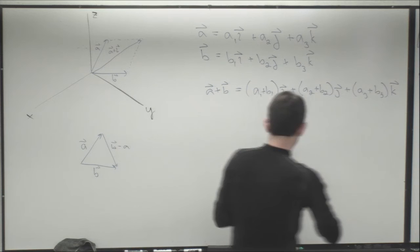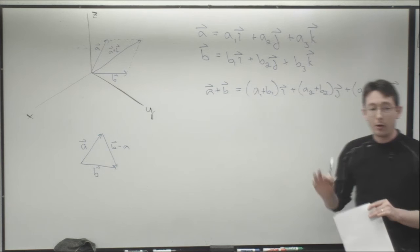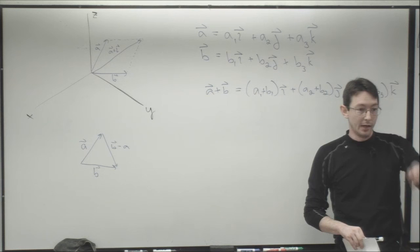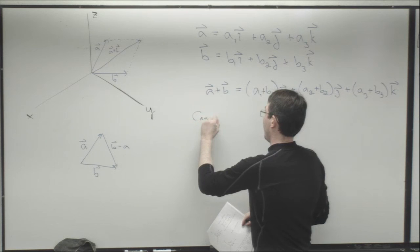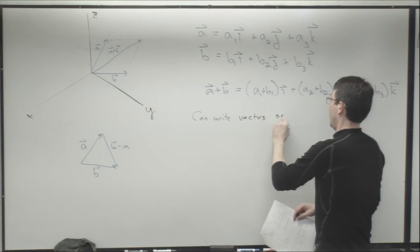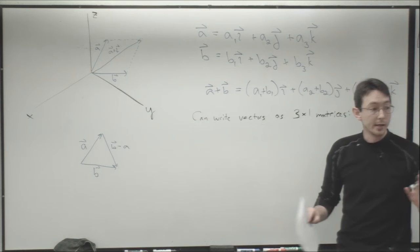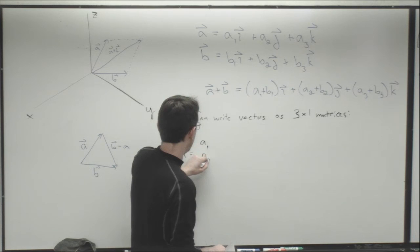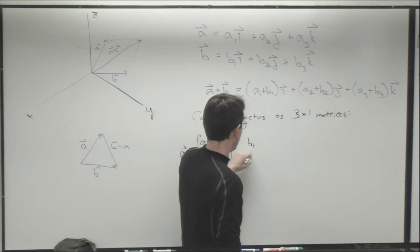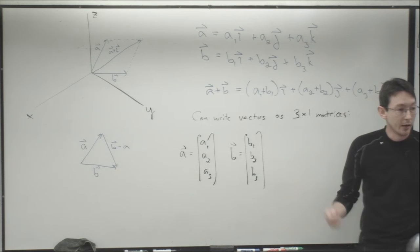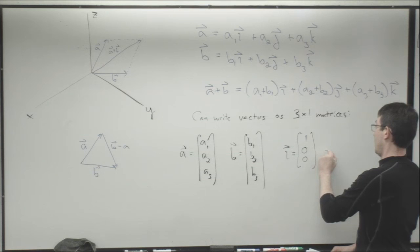We've always written vectors as column vectors — n-by-1 or 3-by-1 matrices. So we can write a as the column vector (a1, a2, a3) and b as (b1, b2, b3). The unit vectors i, j, and k are easy: i is (1, 0, 0), j is (0, 1, 0), and k is (0, 0, 1). What we're describing is a way of representing a direction in space — a, b, b minus a, a plus b are all directions in a three-dimensional space, and a column vector is one way to represent that information.